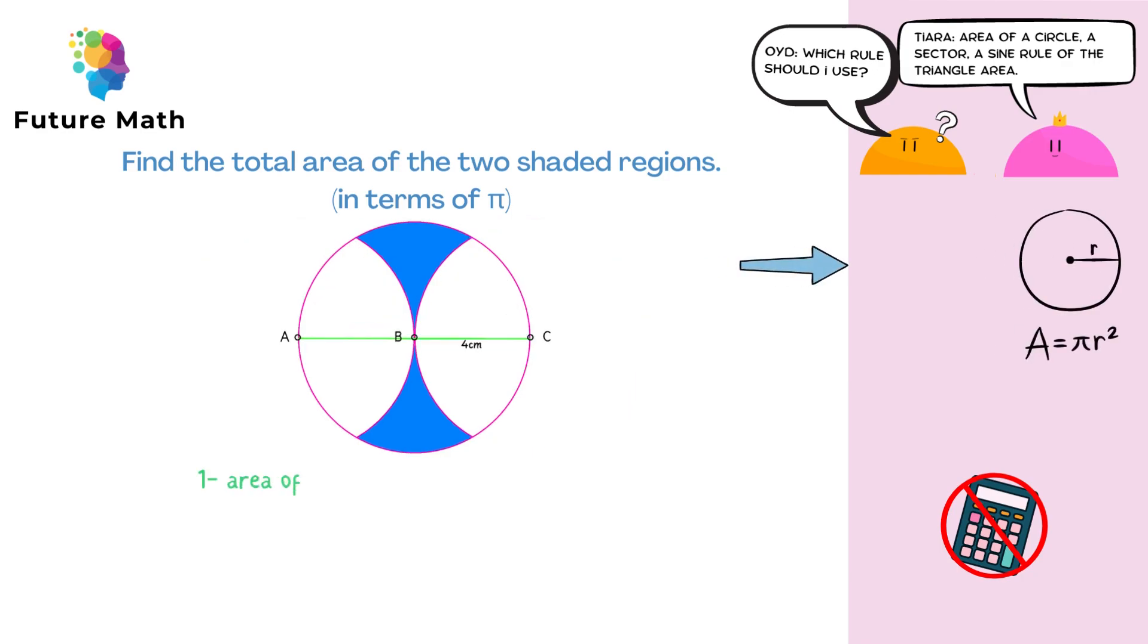Alright, first find the area of the circle, and that is pi r squared, which is pi times 4 squared, and this comes out as 16 pi.